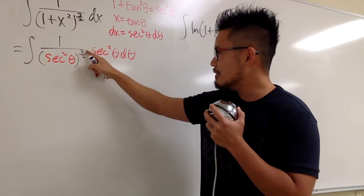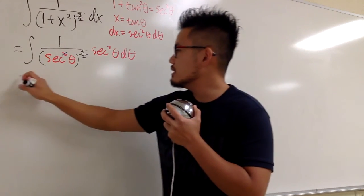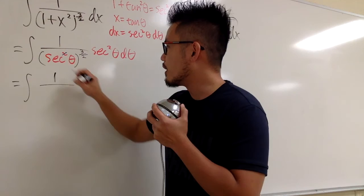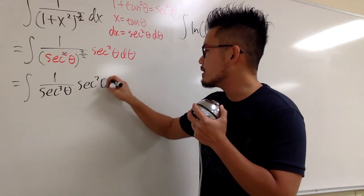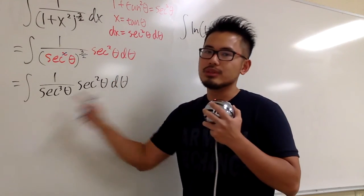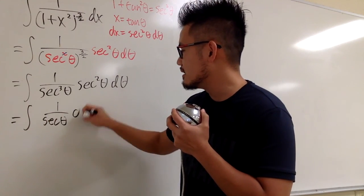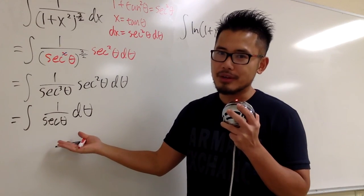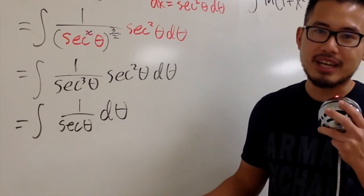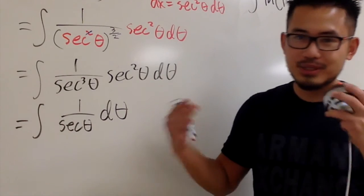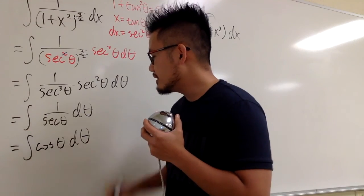This is a square raised to the 3 over 2 power, so the 2 and the 2 cancel each other out. This becomes the integral of 1 over secant to the 3rd power, times secant squared theta d theta. We can cancel two of those, leaving 1 over secant theta d theta. Since secant is 1 over cosine, then 1 over secant is just cosine. So this is the same as integrating cosine theta d theta.